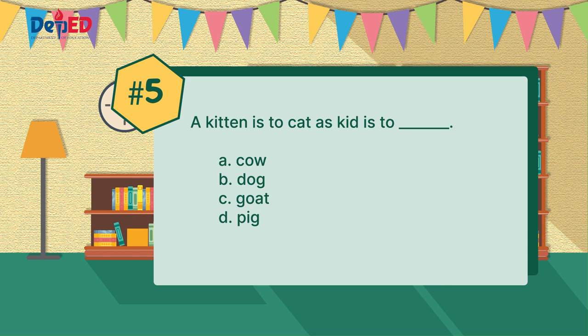And for the last item, number five: a kitten is to cat as kid is to blank. Is it letter A, cow? Letter B, dog? Letter C, goat? Letter D, pig?